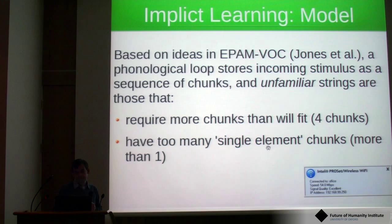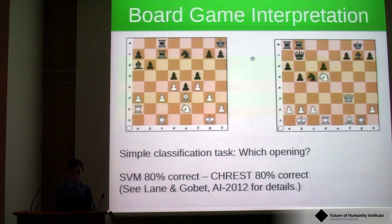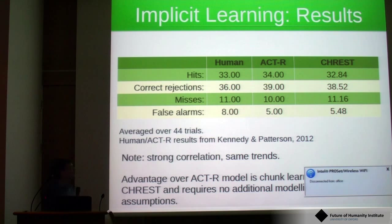When we look at the results, these are the results from the human and ACT-R models from that paper. On the right are the results in CREST, and you'll see that there's a very strong correlation in terms of the numbers and the overall effects.